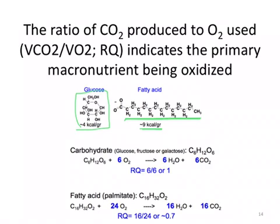The opposite is true for the respiratory quotient. For example, a C6 carbohydrate reacts with six oxygens to give six waters and six CO2s when fully oxidized, and therefore the respiratory quotient is six divided by six, or one. Comparing that to a fatty acid like the saturated fat palmitate, which has 16 carbons: it requires 24 oxygens to fully oxidize it and gives 16 CO2s, and therefore has a respiratory quotient of 0.7.